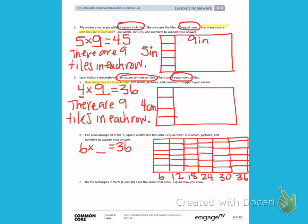If we look at A, our area in A was 36 square centimeters. Our area in B was 36 square centimeters. On your own, think about if those rectangles in part A and B have the same area. And explain with words how you know.